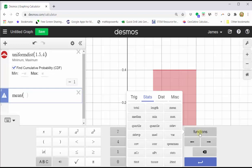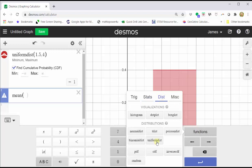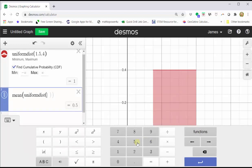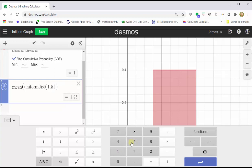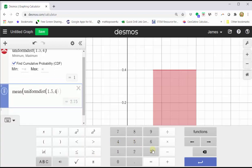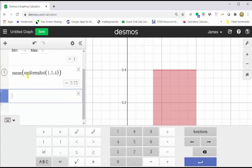Click functions. Click the distribution tab. Click uniform distribution. Enter 1.5 comma 4. Enter. And we can see the mean is equal to 2.75